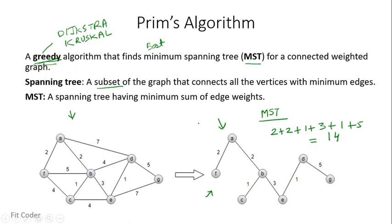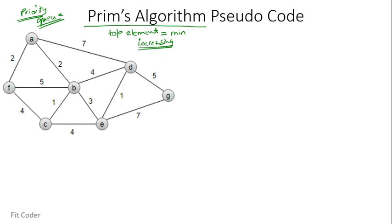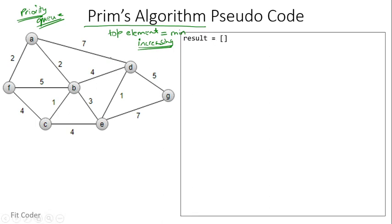Now let's see the pseudo code for Prim's algorithm. Prim's algorithm relies on a data structure called a priority queue. A priority queue is a special type of data structure in which each element has a certain priority, arranged in increasing or decreasing order. Most languages have a priority queue class defined. For Prim's algorithm, we need a priority queue where the top element is the minimum element — all elements arranged in increasing order. This is required because at each step we extract the minimum element, which keeps time complexity low.